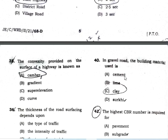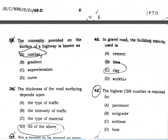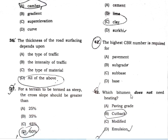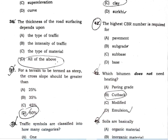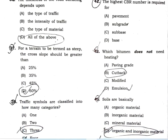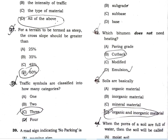Gravel roads use building material aggregate. A high CBR number indicates a strong subgrade. Cut-back bitumen does not need heating before application.